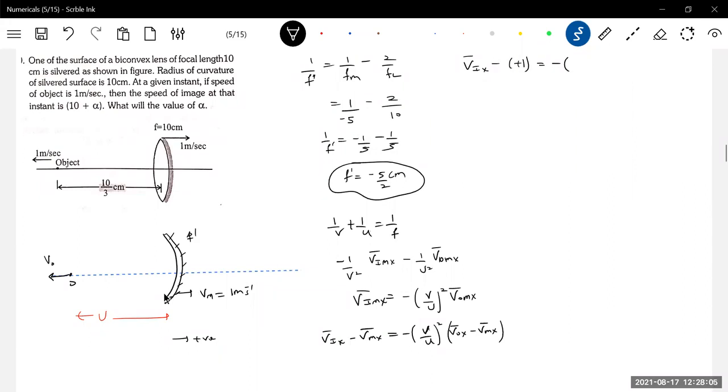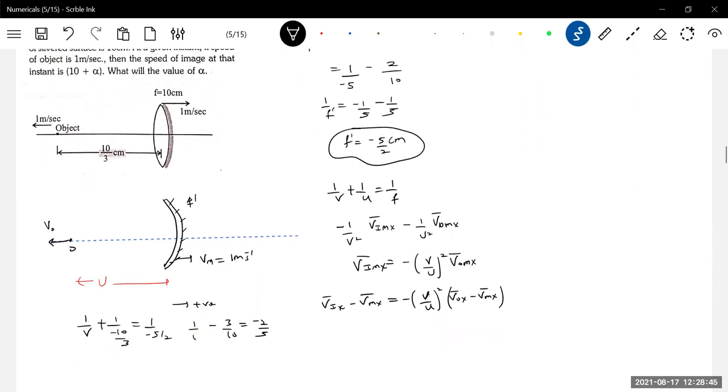We don't know v and u. Using mirror formula we can find that also. U is minus 10 by 3, f dash you have to substitute, not that 10 centimeter here. You have to be very careful, look at the v. 1 by v minus 3 by 10 minus 2 by 5. 1 by v minus 10 minus 10, so v equal to minus 10 centimeter.